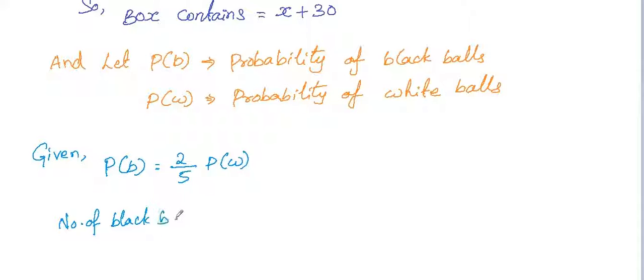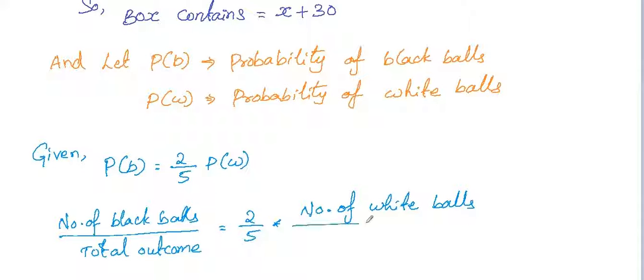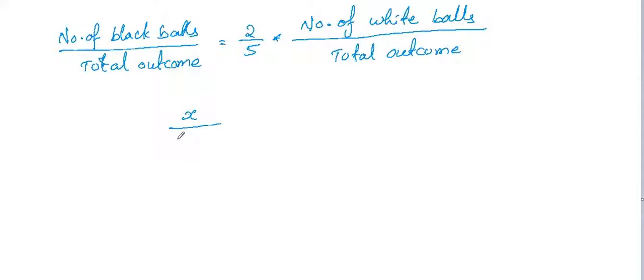So now write down the basic probability formula. The probability of drawing black balls is the number of black balls divided by total outcomes. Total outcome here is nothing but the number of balls which the box contains, which is x plus 30.